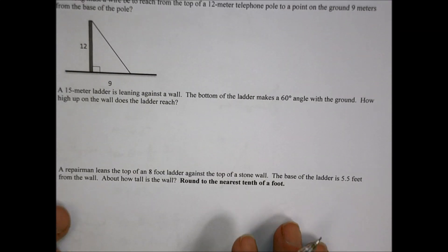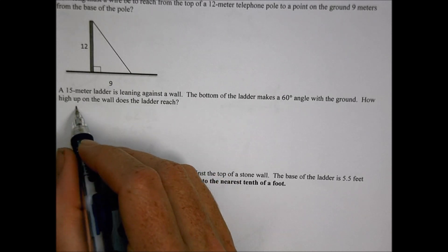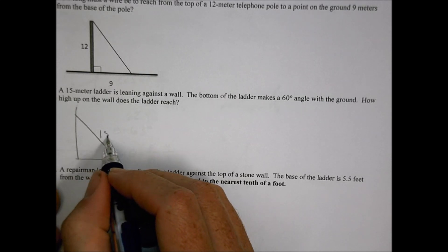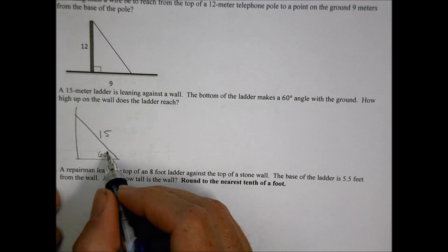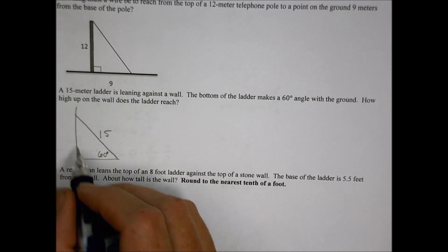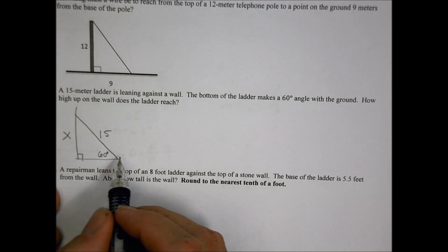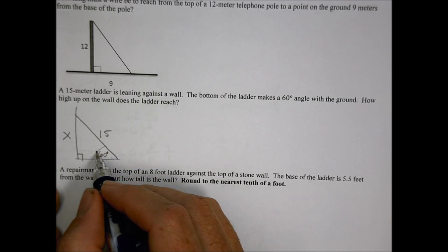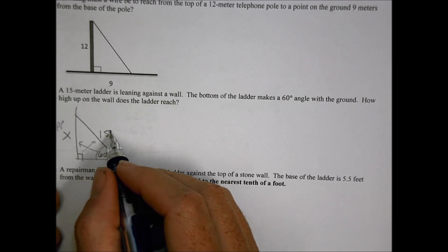Let's look at number 17. A 15 meter ladder is leaning against a wall. So here's a wall and here is a ladder. It's 15 meters long. The bottom of the ladder makes a 60 degree angle with the ground. How high up the wall does the ladder reach? So that's our ladder, 15 meters long, 60 degree angle. And that's there. So we have an angle. We're looking for the opposite side and this becomes the hypotenuse.